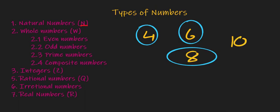We can see 4 is divided by 1, 2 and 4 itself. So this number has factors more than 1 and the number itself. So this is a composite number.